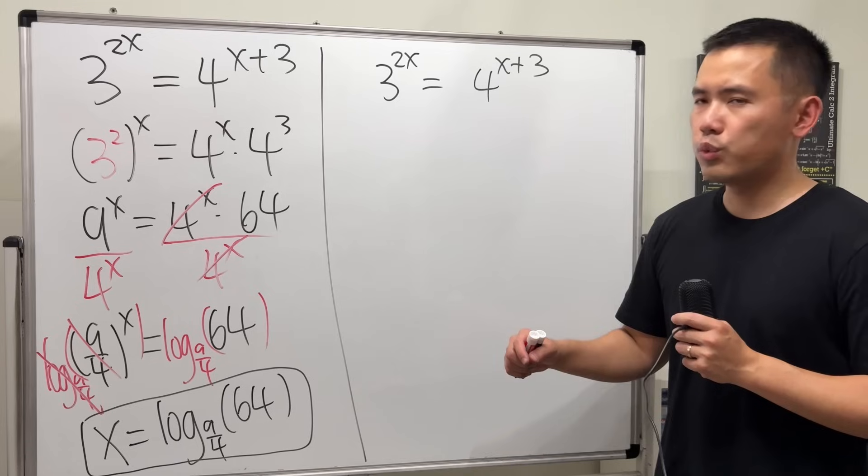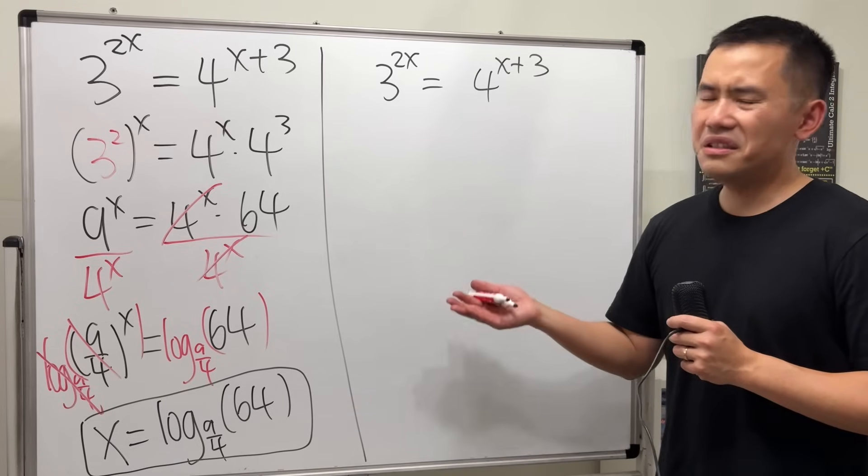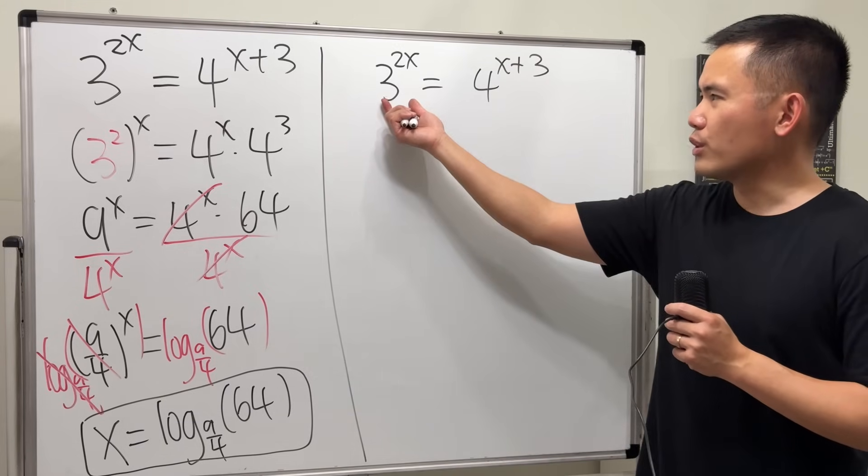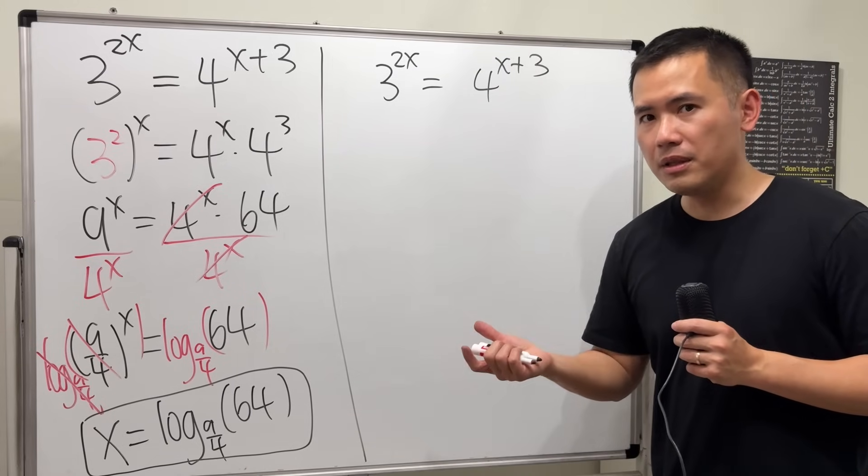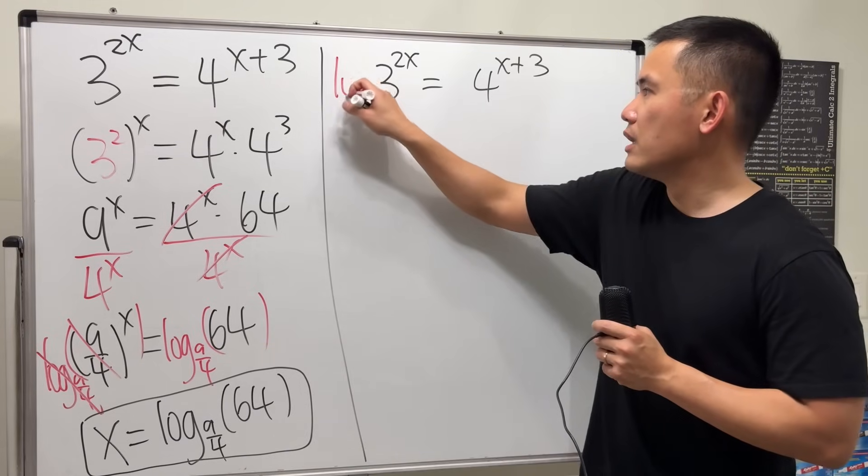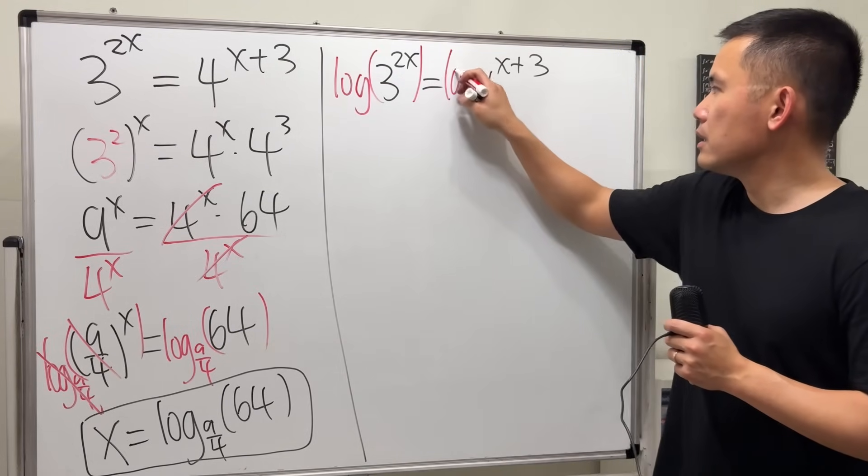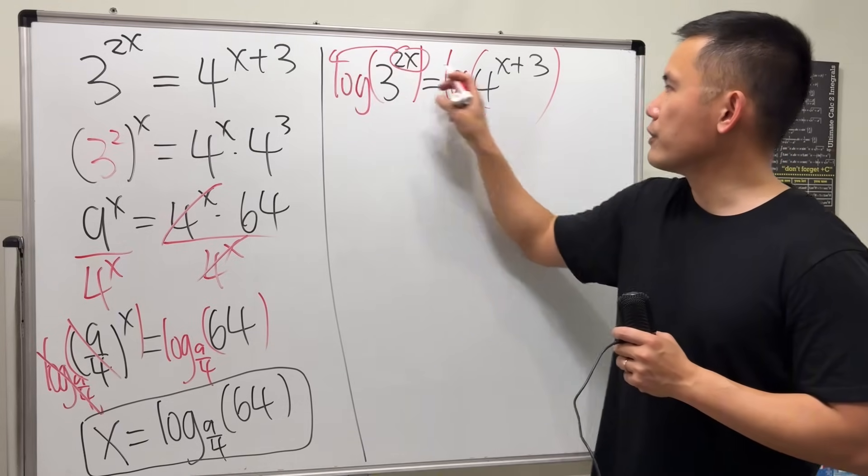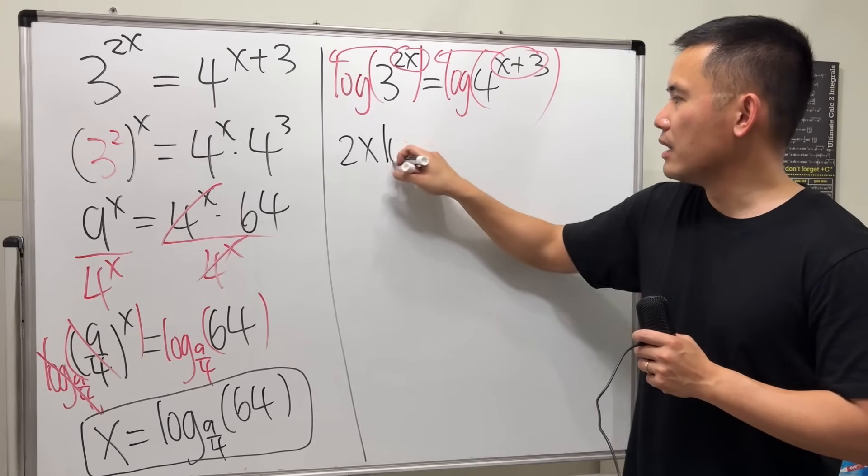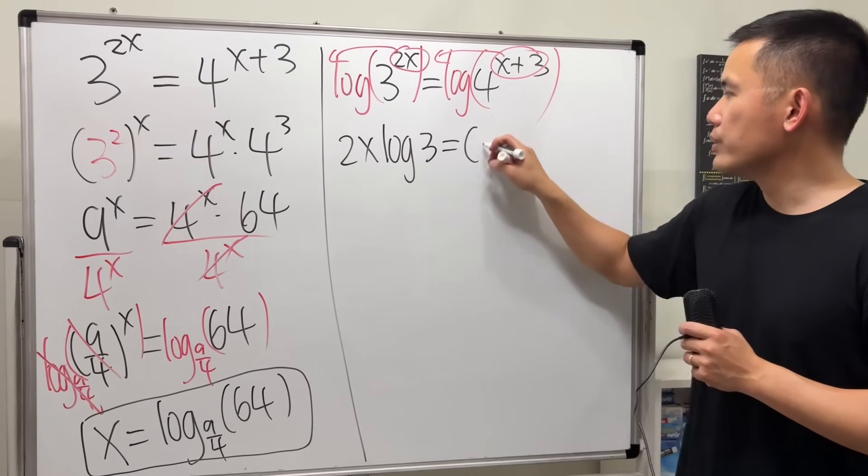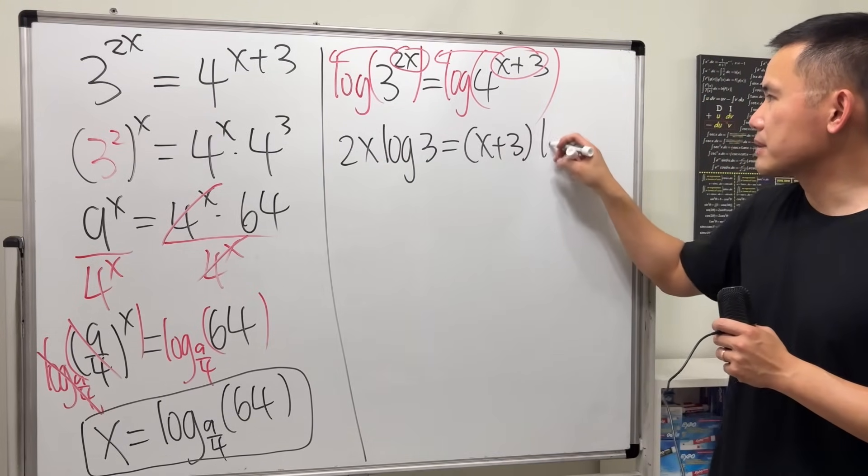But which log though? Log base what? In here, it doesn't really matter. I don't know if I should do log 3 or log 4. Let's just be fair. Let's use the common log on the calculator, which is just log base 10. So that way we can put the power to the front, like so. So we get 2x·log(3) = (x+3)·log(4).